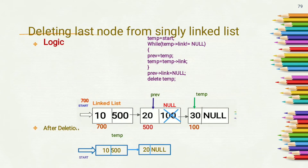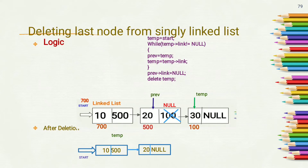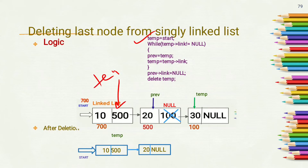To delete the last node from the singly linked list we have to perform some steps. First, we have to move a temporary pointer to the last node and a previous pointer to the node which is previous to the last node. We do this because when the last node is deleted, the previous node will become the new last node, so we need the address of both. To start, we store the address of start into temp, making temp point to the first node.